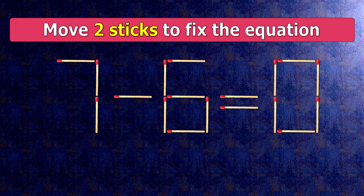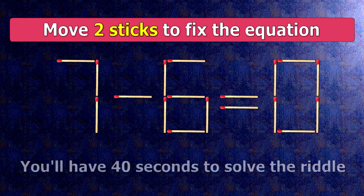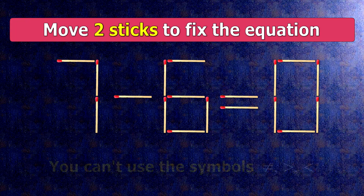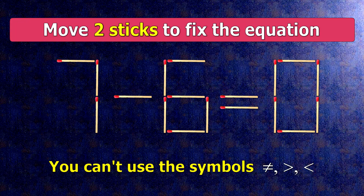We have the equality: seven minus six equals zero. Our equality is wrong. We need to move two matches to make our equality correct.